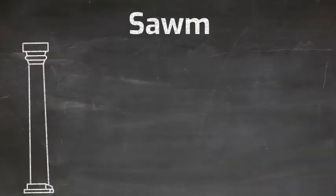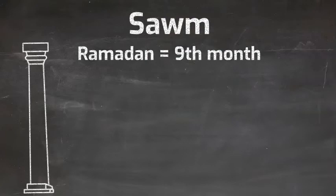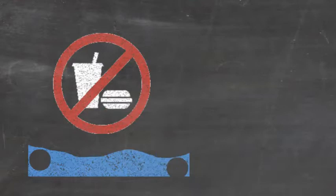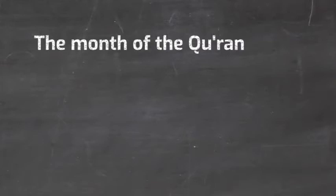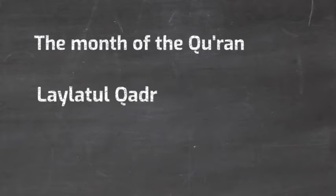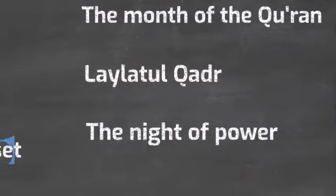Saum is fasting, which takes place in the holy month of Ramadan, the ninth month of the lunar calendar. Muslims are prohibited from drinking or eating anything between sunrise and sunset. Ramadan and the fast are a time for Muslims to draw closer to God, their faith and their community. Ramadan is also called the month of the Quran because it is said that it's the time when the Quran was revealed to the Prophet Muhammad. The night on which this occurred is known as Laylatul Qadr, or the night of power. During Ramadan, the meal eaten before sunrise is known as suhur, and the meal eaten at sunset is called iftar.